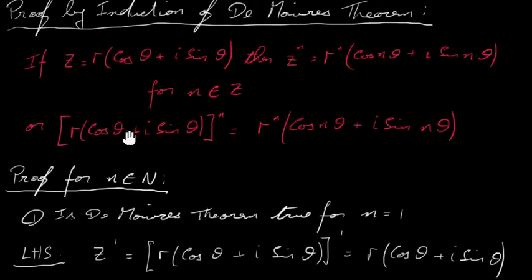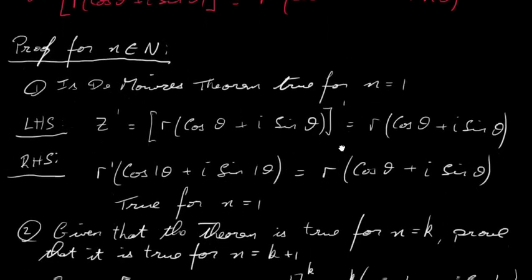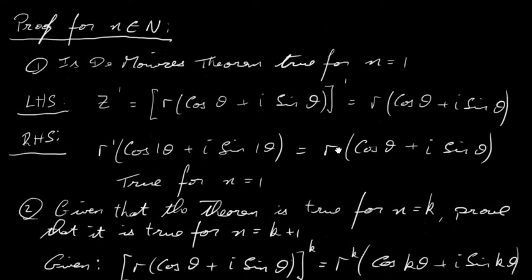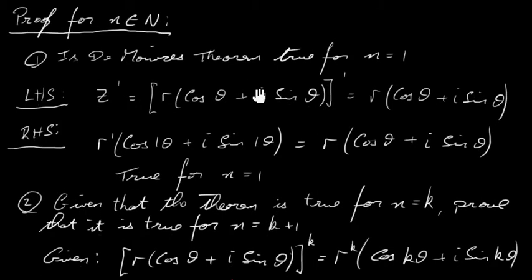In other words, this is our complex number in polar form. Raise it to the power of n: you raise r to the power of n, and then you put the n in front of the theta — you multiply the angle by n — so you get nθ, nθ: cos nθ + i sin nθ. So is that true? Well, it is true, so we're going to prove it in two steps.